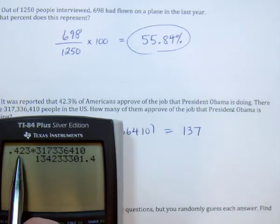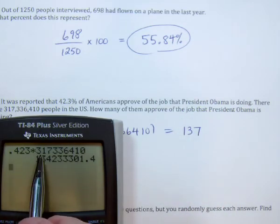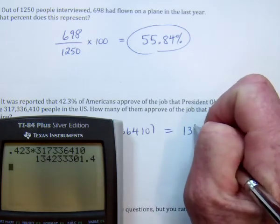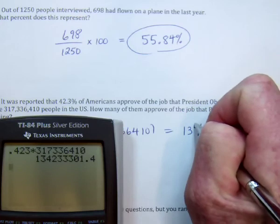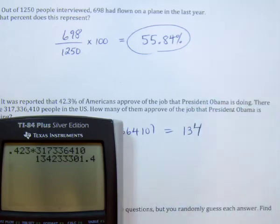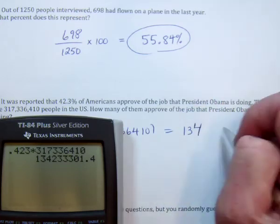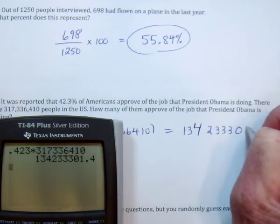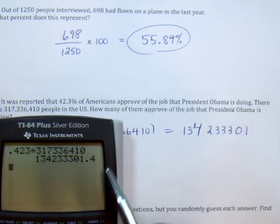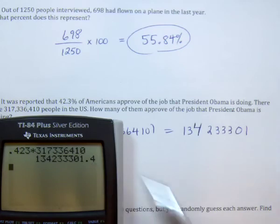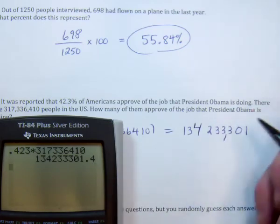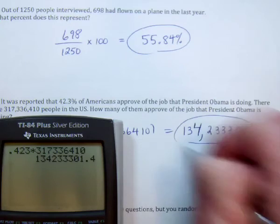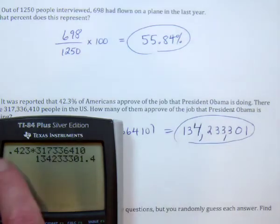Now it's right: 0.423 times 317,336,410. The answer ends with a .1, and since there's no such thing as 0.1 of a person, we round it. So the answer is 134,233,301.